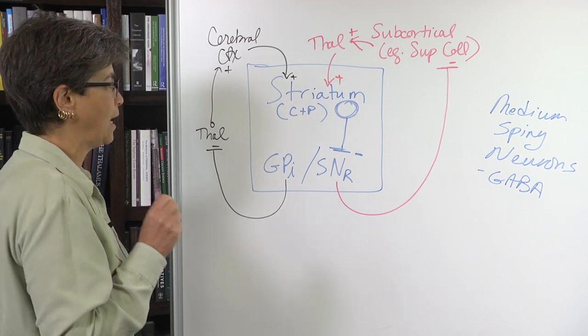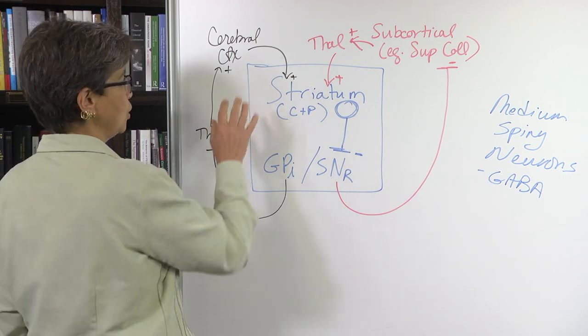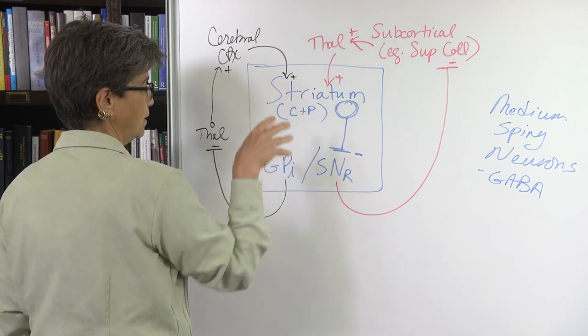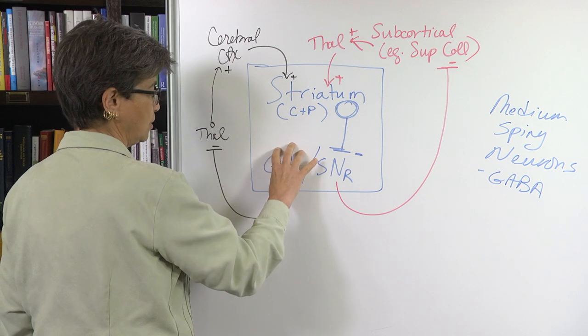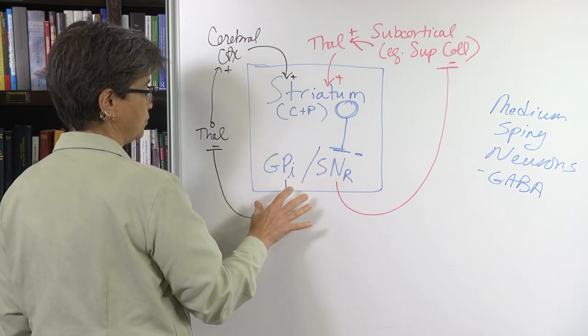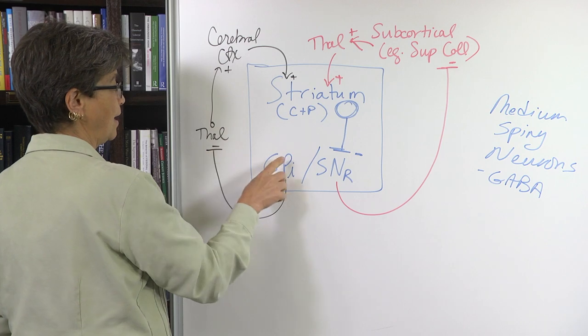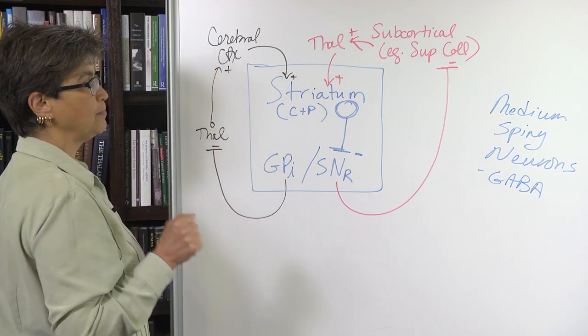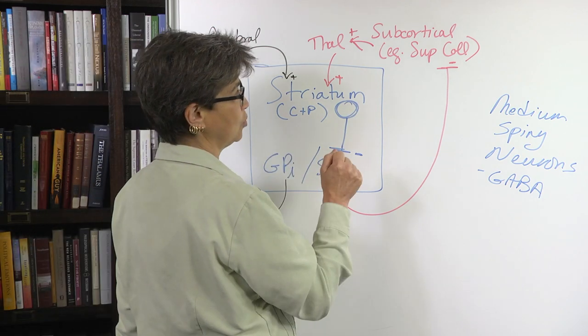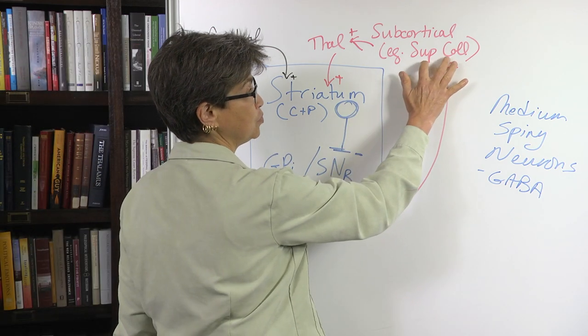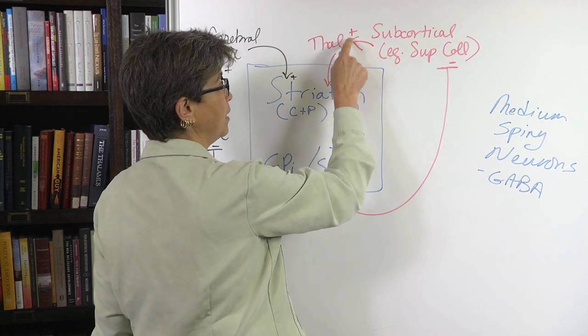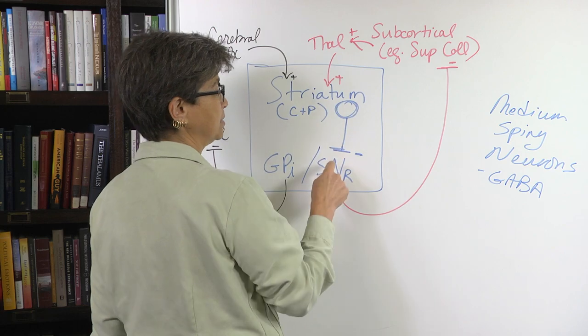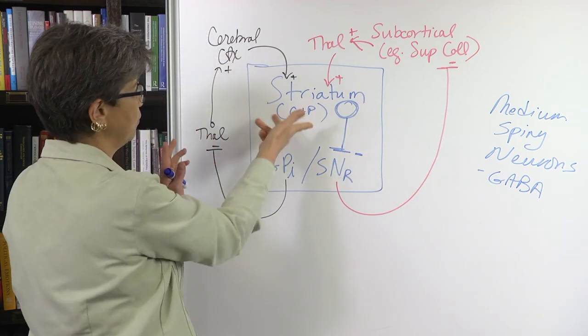Information from the cerebral cortex comes directly into the striatum, gets sent off to the globus pallidus internal and substantia nigra pars reticulata, which project back to thalamus, which goes back to cerebral cortex. The pathway by which subcortical sites such as the superior colliculus influence the striatum is that the input comes via the thalamus and the output is direct. It's just reversed.